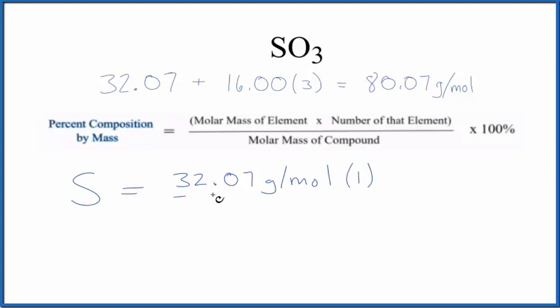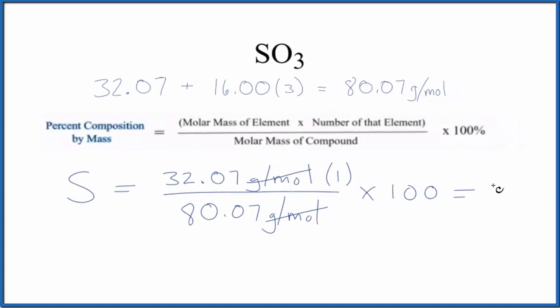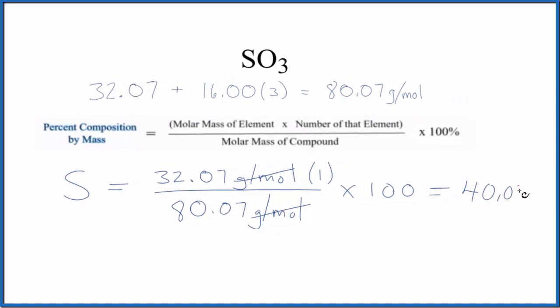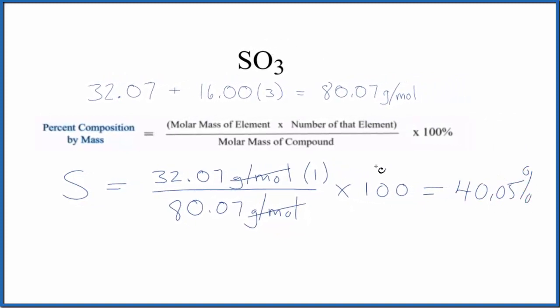Multiply that by one, and then divide by the molar mass we just found. We then multiply by 100 to get a percent. Notice that we have grams per mole on the top and the bottom. Those cancel out. We end up with 40.05% for sulfur.